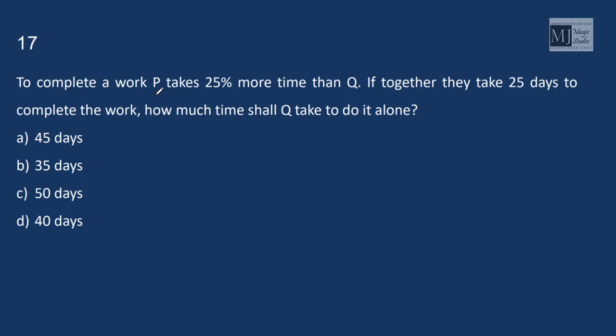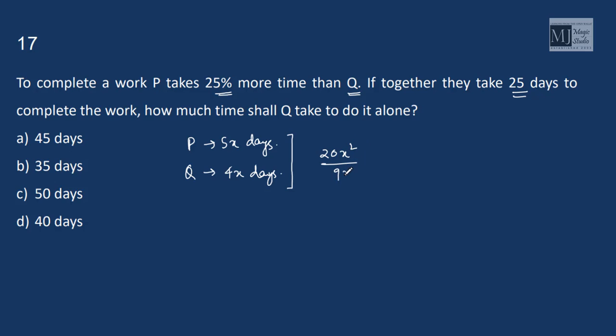To complete a work, P takes 25% more time than Q. So if I assume, let Q takes 4x days, then 25% of 4x is x. P takes 5x days. If together they take 25 days, then the formula for together is product by sum. Product is 20x square and sum is 9x is 25.